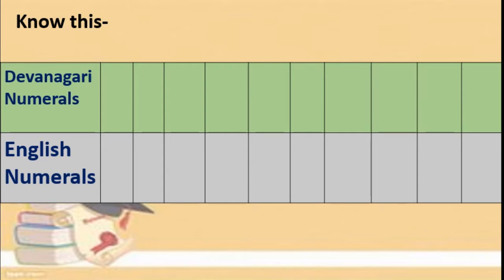Now see this. Here, 2 columns are there. In the first one, Devanagari numerals are there, and in the second one, English numerals are there. Let's see this.